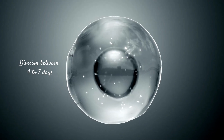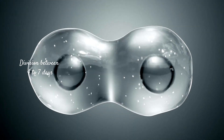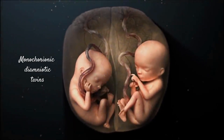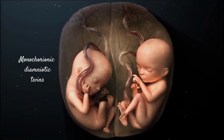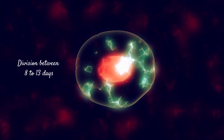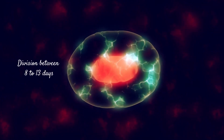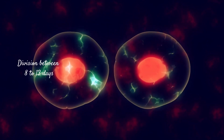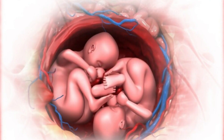When the division occurs between four to eight days, it results in twin babies sharing the same placenta but each with separate amniotic sacs, also called monochorionic-diamniotic twins. When the division occurs between eight to 13 days after fertilization, both twins will share the same placenta and the same amniotic sac. These twins are called monochorionic-monoamniotic twins.